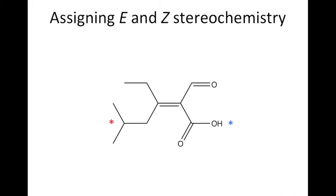The two highest priority groups now are on the same side of the double bond, and therefore this compound is considered the Z isomer.